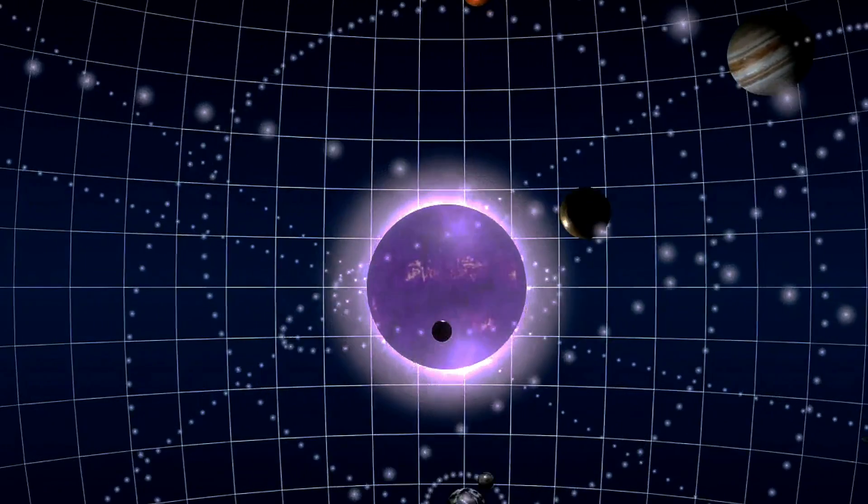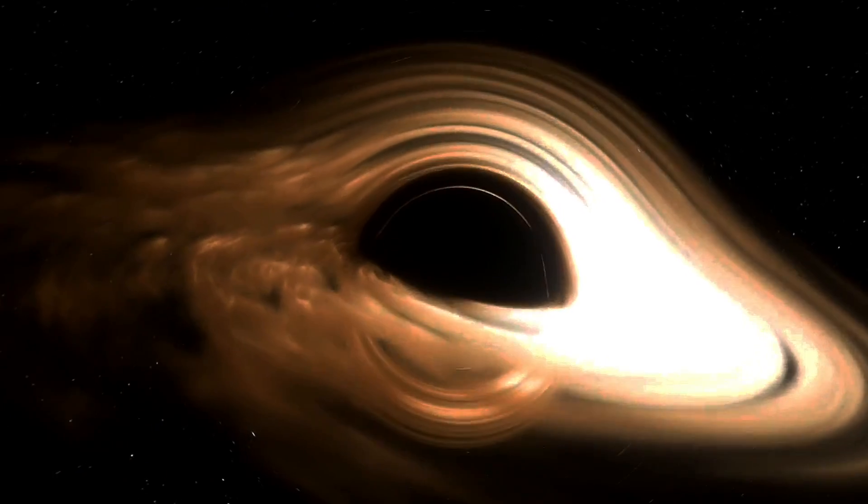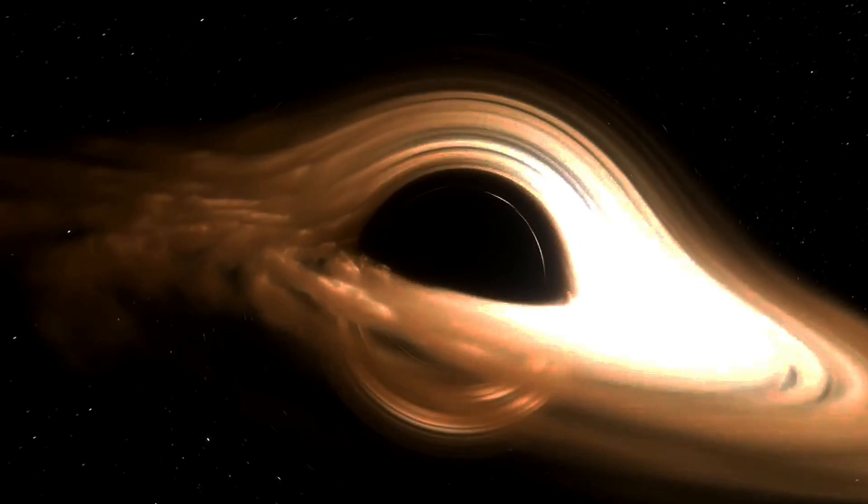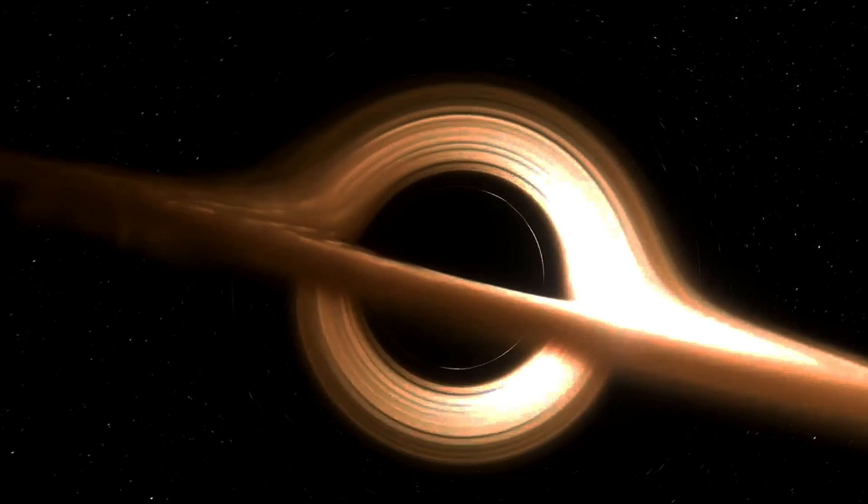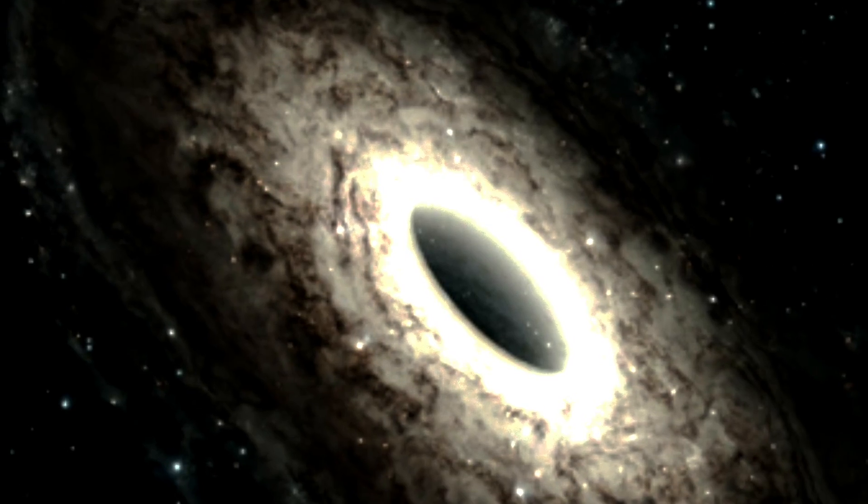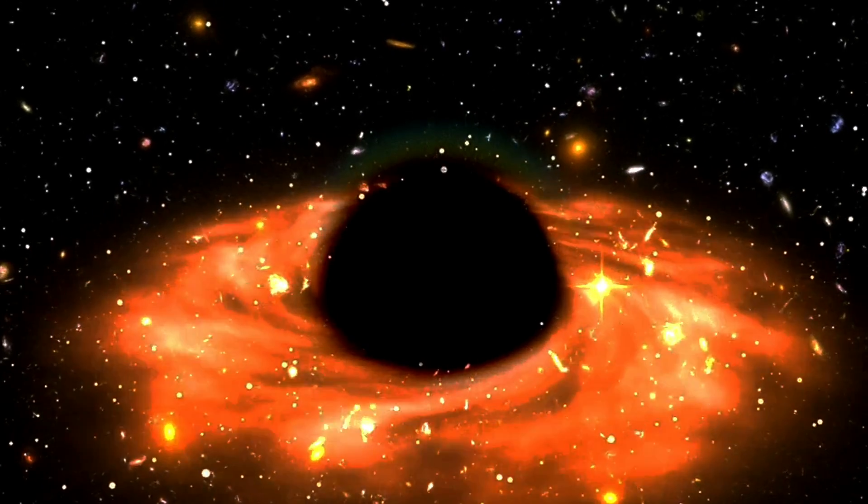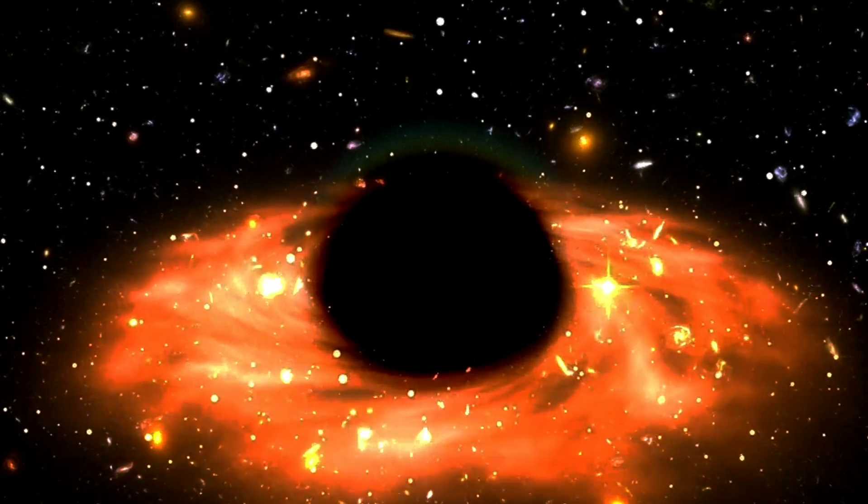When a body with the density of water reaches around 136 million solar masses, its physical radius is overtaken by its Schwarzschild radius, transforming it into a supermassive black hole. But how do these gigantic entities come into existence? It's believed that supermassive black holes don't form instantly from the collapse of a cluster of stars. Instead, they may begin as smaller, stellar-sized black holes and grow larger over time by accreting matter or even merging with other black holes. Take the supermassive black hole at the center of our Milky Way galaxy, for example. Its Schwarzschild radius is approximately 12 million kilometers, and its mass is about 4.1 million times that of our Sun.